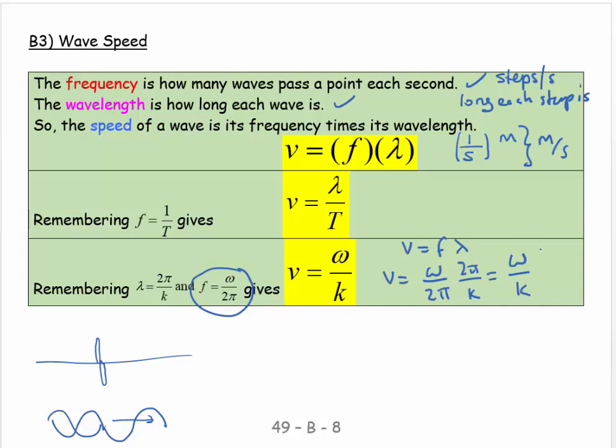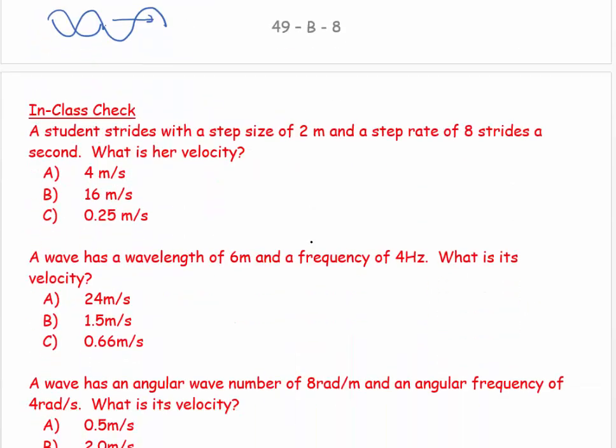And again, if I check my units, my omega is in radians per second and my K is in radians per meter. So if I cancel these out, I get meters per second. So three different versions to give you the velocity. Let's look at a couple of examples.